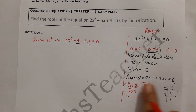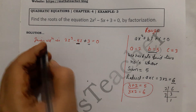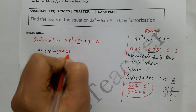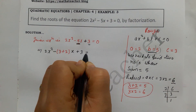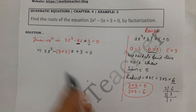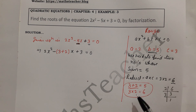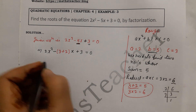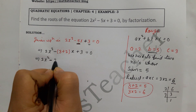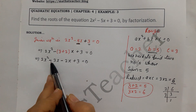We have found numbers whose sum is 5 and product is 6 — those are 3 and 2. Now rewrite the equation: 2x squared minus 3x minus 2x plus 3 equal to 0. We split the middle term minus 5x into minus 3x and minus 2x.